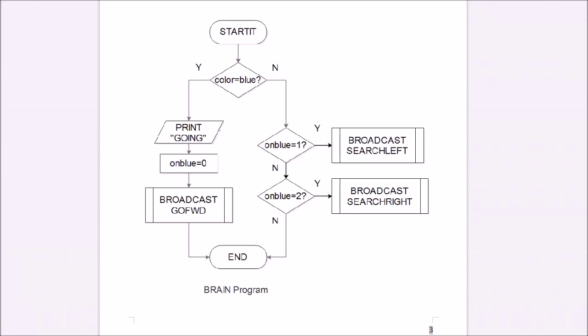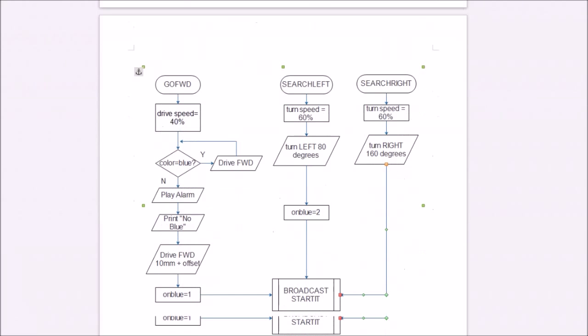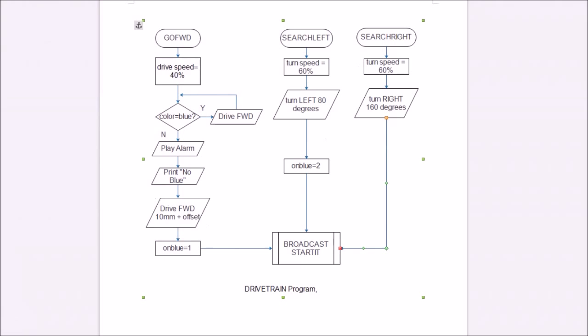If, after you turn left, the tape isn't blue, then of course it's a no for this first question. Then you go down to where on blue equals two. Yes, it is. You broadcast search right. Again, look at the videotape of the robot that I've made. Then the drivetrain program search right, again, sets turn speed of 60%, and then it turns right 160 degrees, which is really 180. In other words, it turns 180 degrees from where the left side was, and that will be the right side of the tape. And it'll broadcast started again.